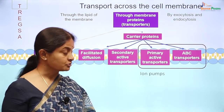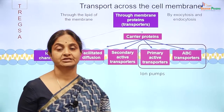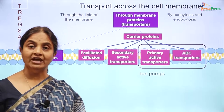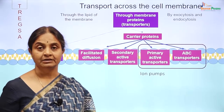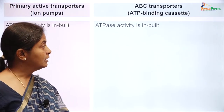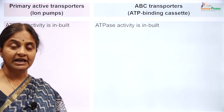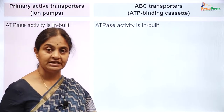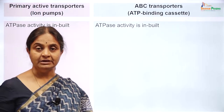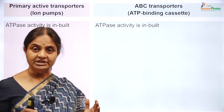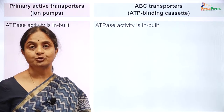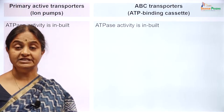The primary active transporters are also referred to as ion pumps. If both ion pumps and ABC transporters are ATP-dependent, why do we classify them separately? Both are ATPase enzymes themselves. The transporter itself is an ATPase enzyme, able to cleave ATP and use the energy to transport substances across the cell membrane.